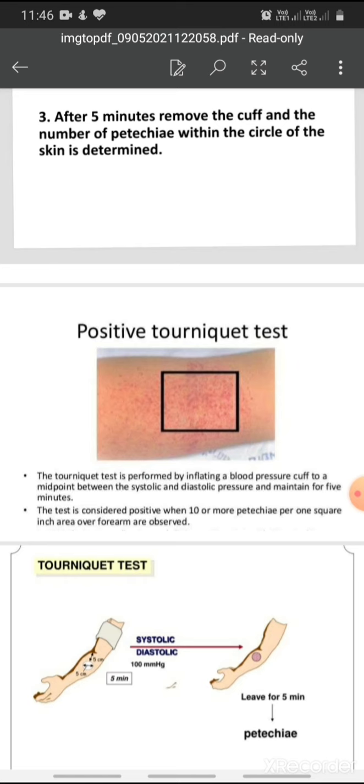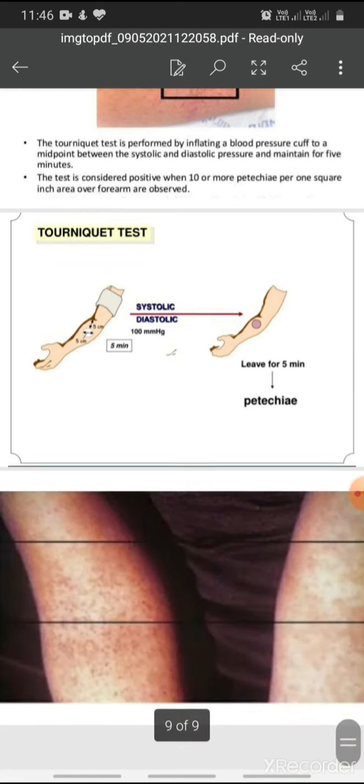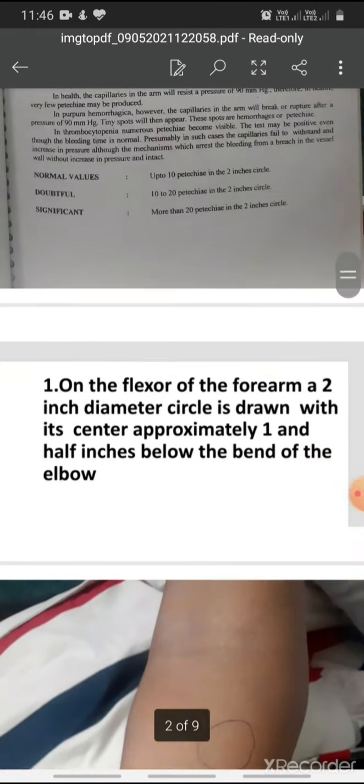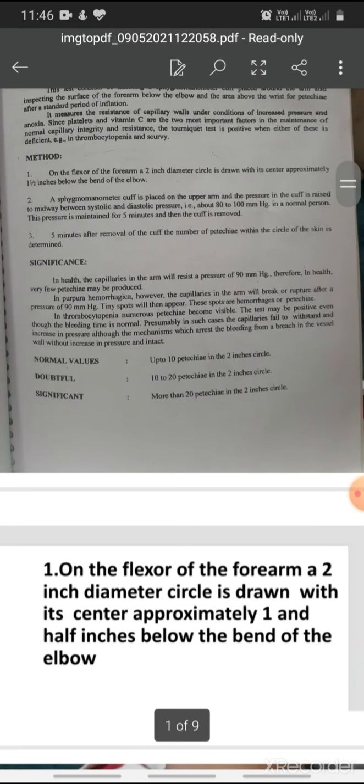The tourniquet test is performed by inflating a blood pressure cuff to a midpoint, which we have described in our procedure. If it is more than 10, it means it is positive. Clinical significance and normal values: normal value is up to 10 petechiae in a 2-inch diameter.